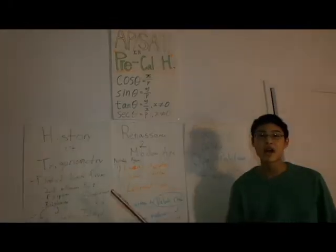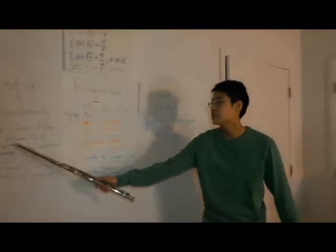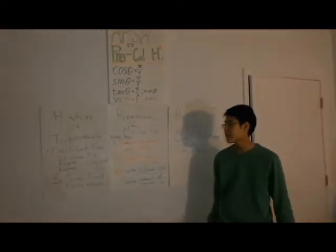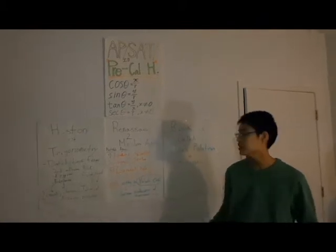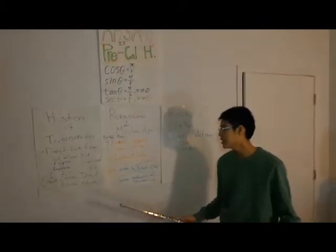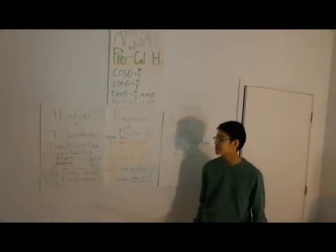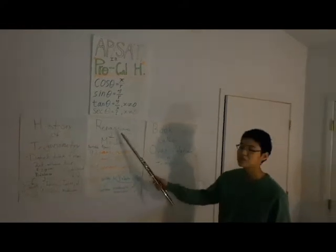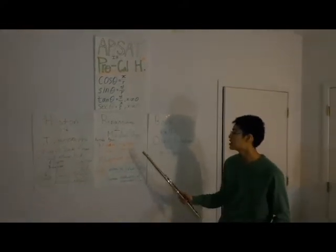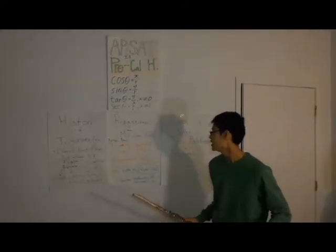The history of trigonometry dated back from the 2nd millennium BCE, starting from Egyptian and Babylonian mathematics, and established later by the Greek, the Chinese, Indian, and Arabian mathematics. Now it goes straight to the Renaissance, to the modern age, where three notable figures come out from.